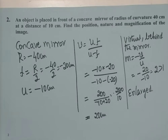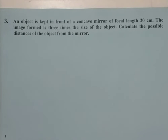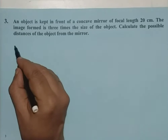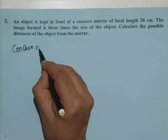In these two problems, we always start by writing what type of mirror is given. That helps us to assign the proper sign for the data given. Now we concentrate on the third problem. An object is kept in front of a concave mirror of focal length 20 cm. The image formed is three times the size of the object. Calculate the possible distances of the object from the mirror. The mirror is concave, and F equals minus 20 cm.